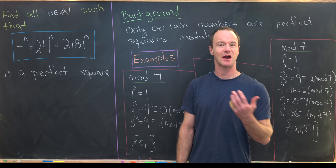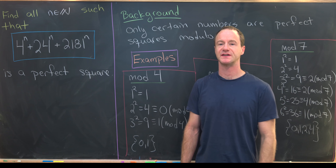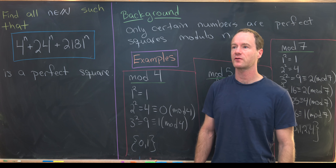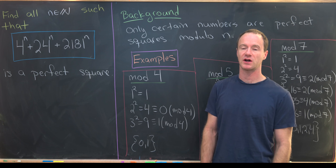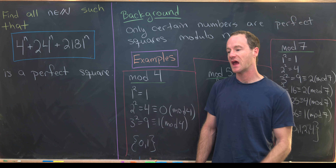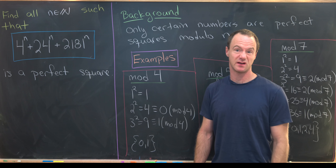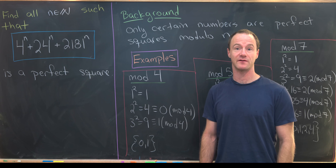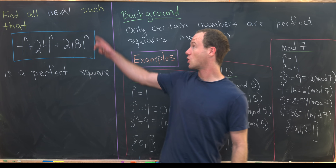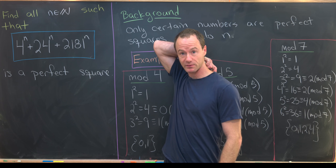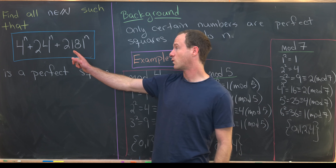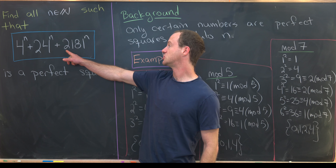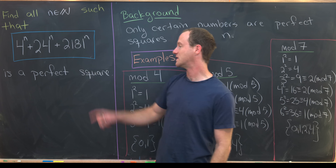Right now at the college where I teach, I'm teaching a course in elementary number theory. We're covering quadratic residues and quadratic reciprocity, and I've written some examples for my class. I like this example so much that I thought I'd make a video of it. Our goal is to find all natural numbers n such that 4^n + 24^n + 2181^n is a perfect square.